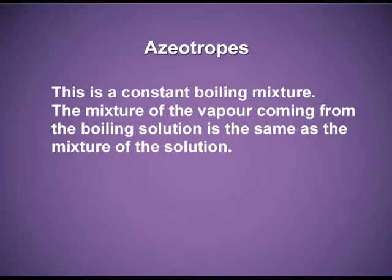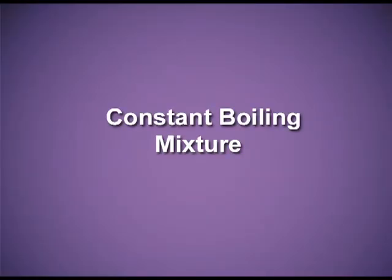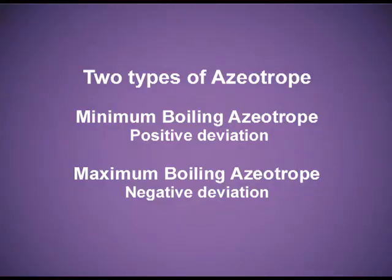The mixture of vapour coming from the boiling solution is the same as the mixture of the solution itself. For example, ethanol obtained by fermentation of sugar is an azeotrope — it contains 95% ethanol and 5% water, and it is very difficult to separate the water from it. Azeotropes are further classified as minimum boiling azeotropes, shown by solutions with positive deviation, and maximum boiling azeotropes, shown by solutions with negative deviation.